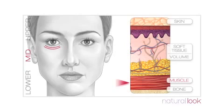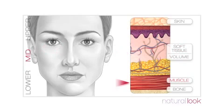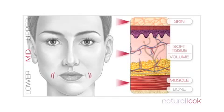Decreased muscle elasticity means less support for fat pads that sit under the eyes, and these also begin to bulge. Muscles of the mid-face involved with repeated facial expressions contribute to the appearance of fine lines around the mouth. These are called accordion lines, and are accentuated even further by facial volume loss.